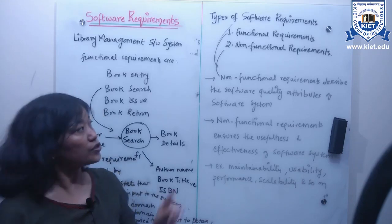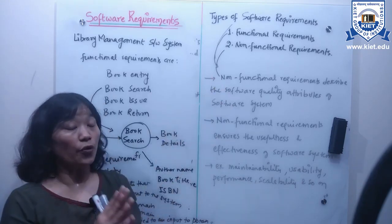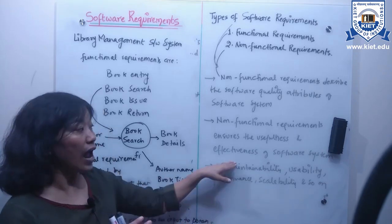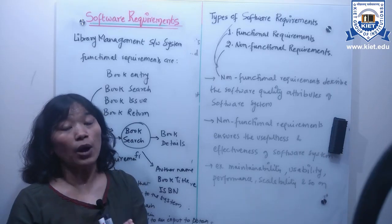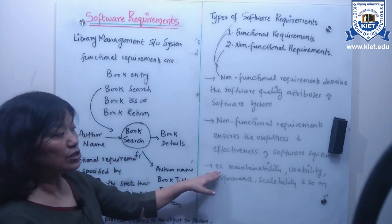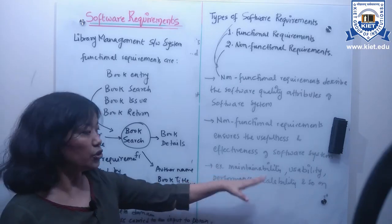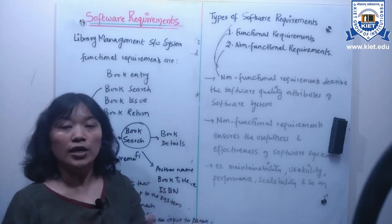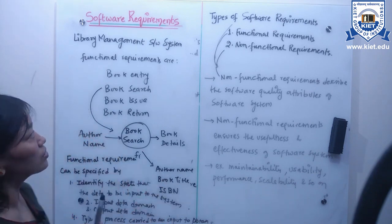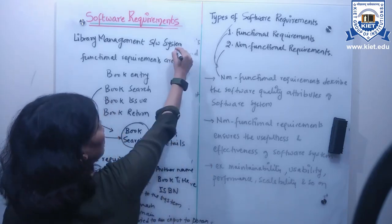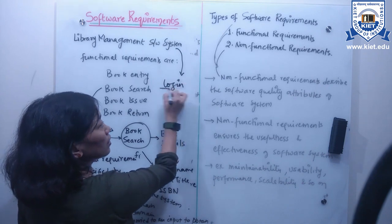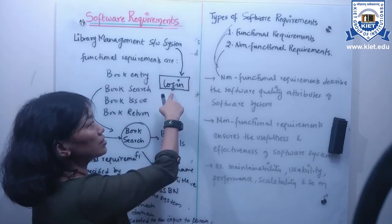Non-functional requirements basically describe the software qualities or quality attributes of a software system, and they ensure the usefulness and effectiveness of the system. If non-functional requirements don't meet expectations, the entire software system becomes useless. Examples of non-functional requirements include maintainability, usability, performance, and scalability. For the library management system, this system has users such as members, and one of the functions is the login function.